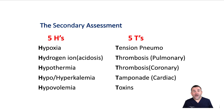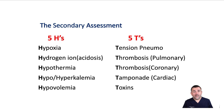Tension pneumothorax results from an abnormal accumulation of air in the pleural space. Pulmonary thrombosis, or pulmonary embolism, is a blood clot from a large vein that breaks off and travels to the pulmonary artery. Coronary thrombosis is a blood clot that forms within a blood vessel of the coronary system. Tamponade is a condition caused by an accumulation of fluid between the heart and the pericardium. Toxins may be best discovered by a focused history.